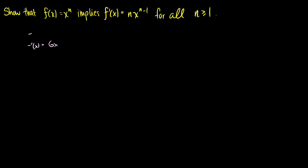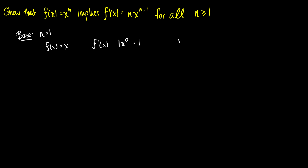So let's start with the base case, which is pretty straightforward. We need to show that n = 1 is true. Well, if f(x) = x, then f'(x) is 1 times x^0, which equals 1, and we know this is true. That's a concrete example to get ourselves onto the ladder.